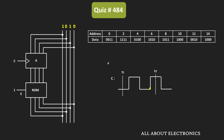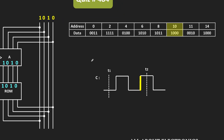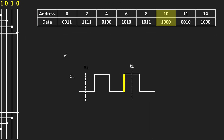At the next rising clock edge, 1010 will get loaded into the shift register, and the same will also be available as an input to the ROM. After this second clock edge, the input to the ROM is 1010. In decimal, that corresponds to 10. As you can see from the table, the data stored at address 10 is 1000.